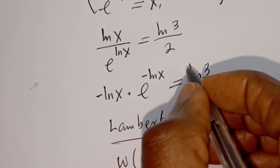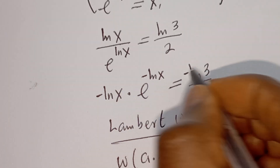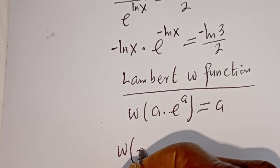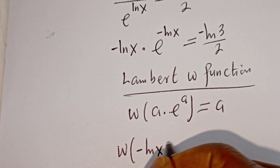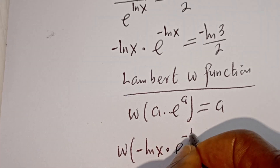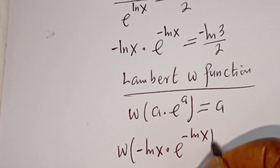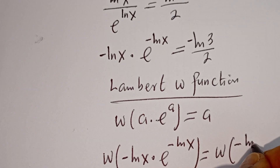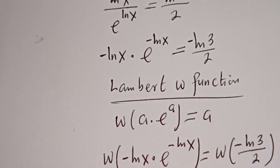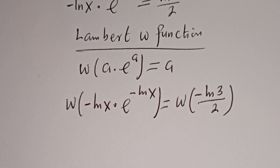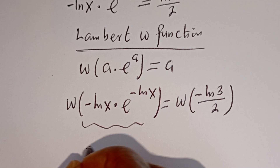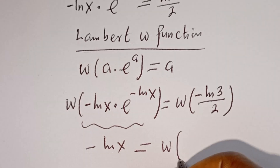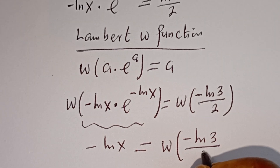So here, let's introduce a negative sign on both sides. We have W of negative ln of x multiplied by e to the power of negative ln of x is equal to W of negative ln of 3 divided by 2. Then from here, the whole of this is negative ln of x, which is equal to W of negative ln of 3 divided by 2.